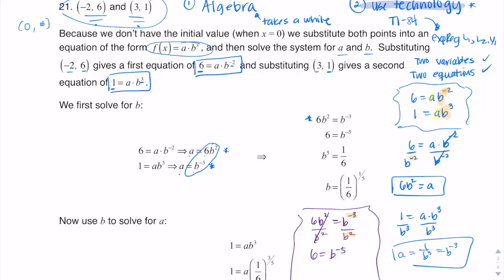If you're not sure what I'm referencing, here's a side example: if I had x to the fifth over x squared, I have two powers whose bases are the same. I subtract the exponents, so this is x to the five minus two, which is x cubed. That's basically what I'm doing here with funkier-looking numbers. So I have six equaling b to the negative five, which I can rewrite as six equaling one over b to the fifth.